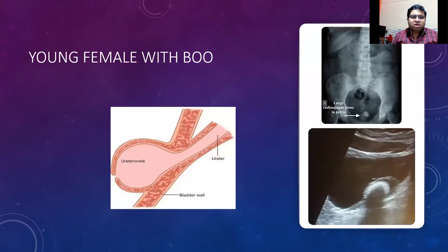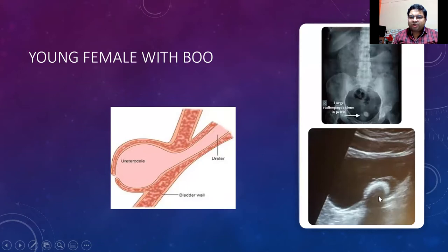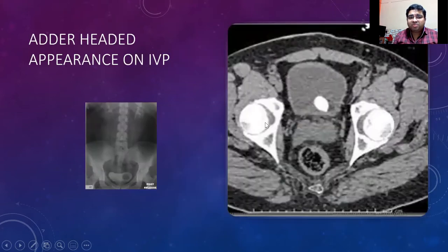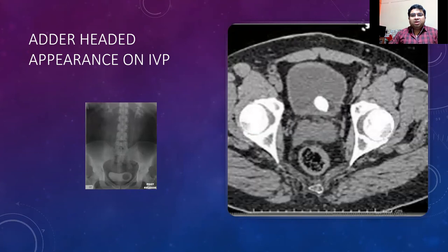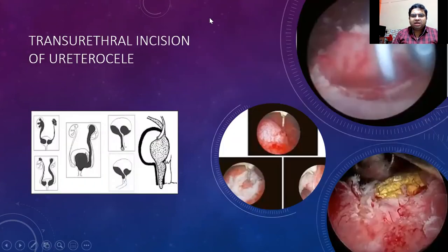The last case: a young female with bladder outlet obstruction. This is a ureterocele — a pouch-like dilatation of the lower ureter invaginated inside the bladder. Ultrasound shows a stone inside the lower ureter cavity with an acoustic shadow. Always do a CT scan, which shows the stone within the ureterocele. The typical appearance of a ureterocele on IVP is known as the 'adder head' or 'cobra head' appearance. In this case, we incise the ureterocele, remove the stone, and place a double-J stent. A ureterocele can be orthotopic or prolapsing outside the sphincter area, causing incontinence.